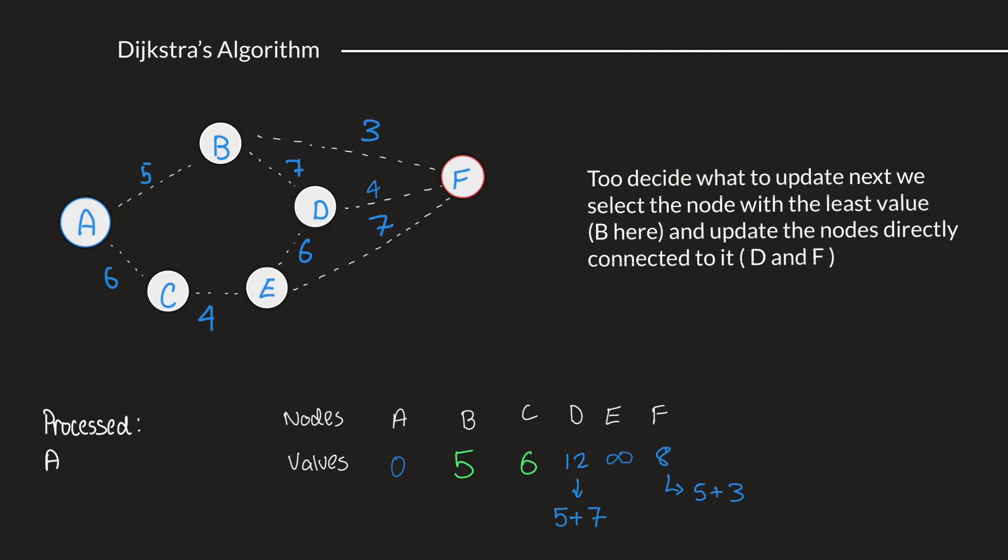Now let's move on to the next step. Here, we put down B in the list of processed nodes. Because we've updated all the nodes that are directly connected to B, which means we can classify it as processed.